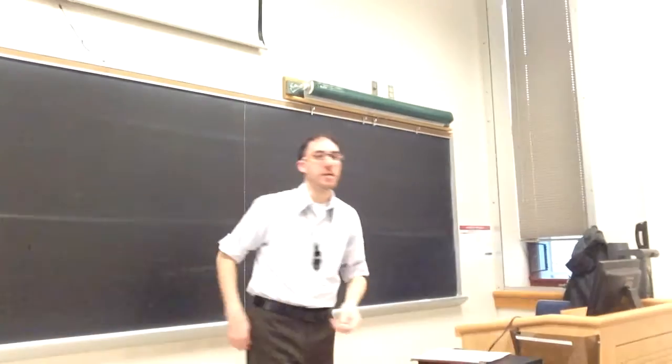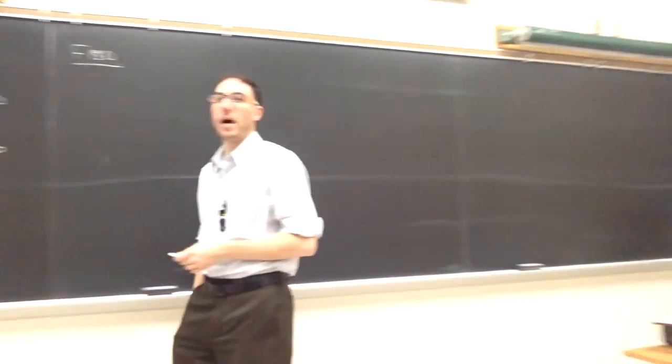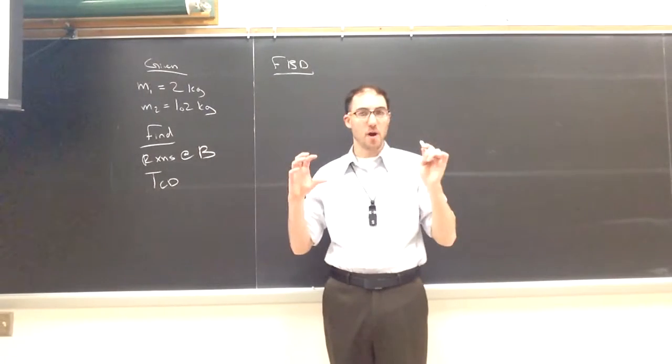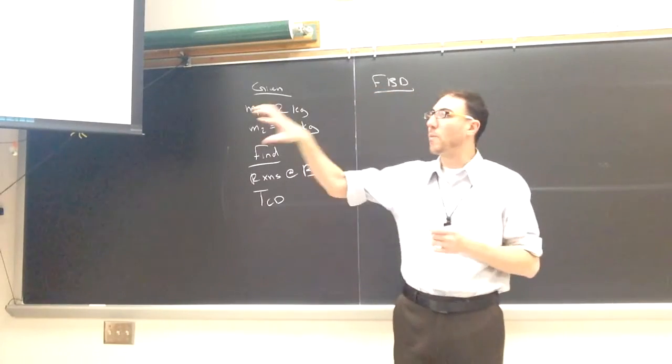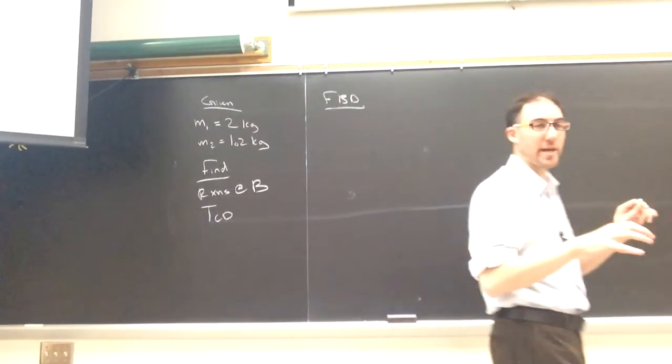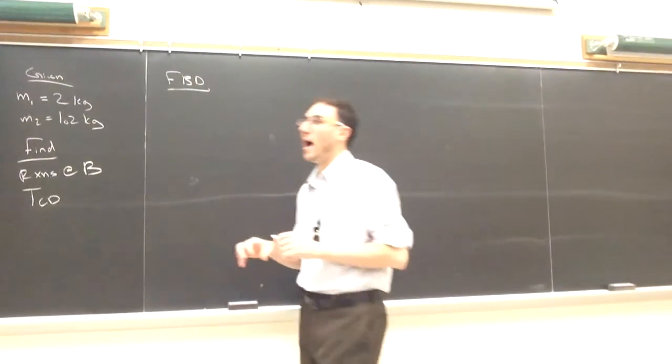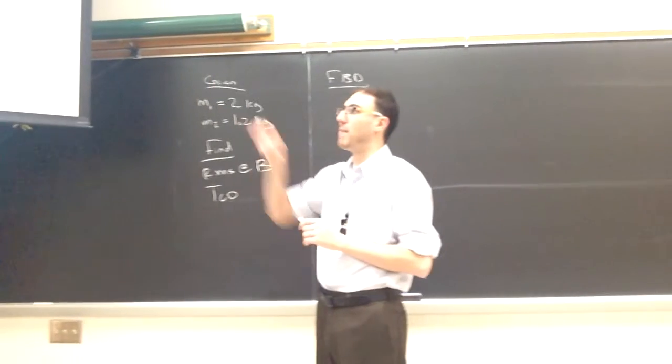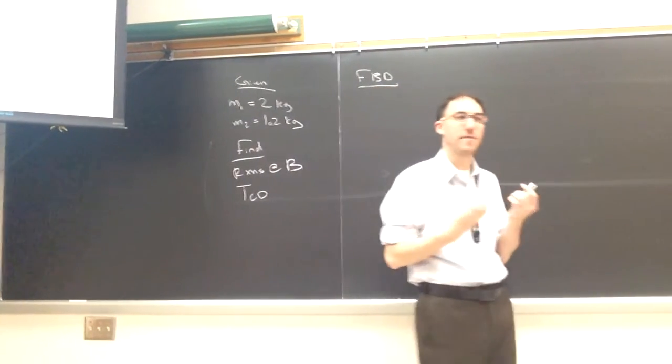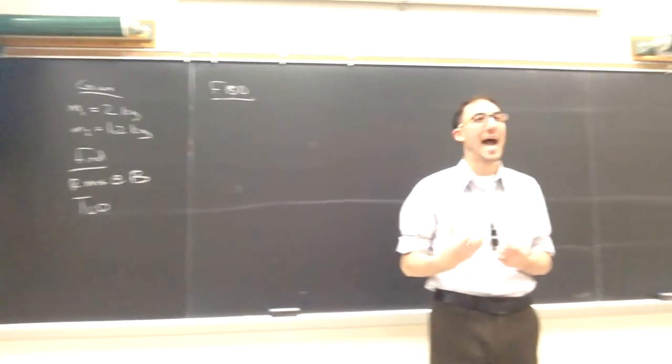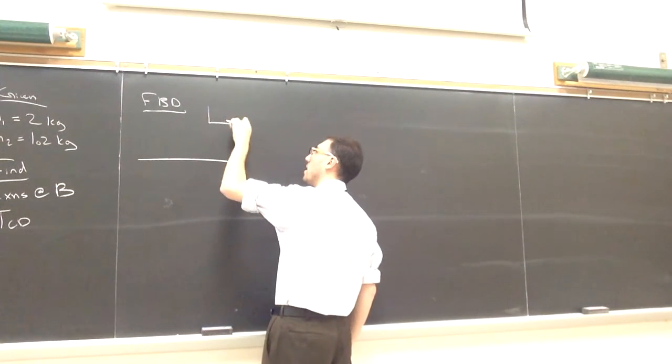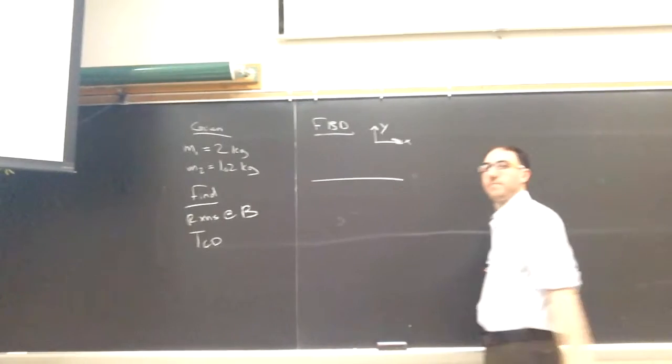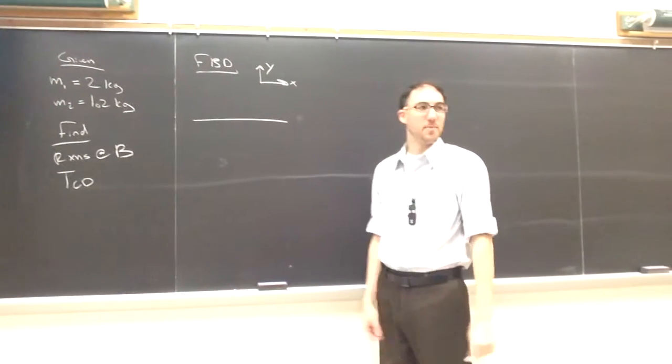So for our free body diagram, what is the object that we're going to isolate and then draw the forces that act on it? We're taking this forearm. We are detaching it virtually from the elbow and from the muscle as well, and we're going to see what are the forces, what are the couples that act on just the forearm.